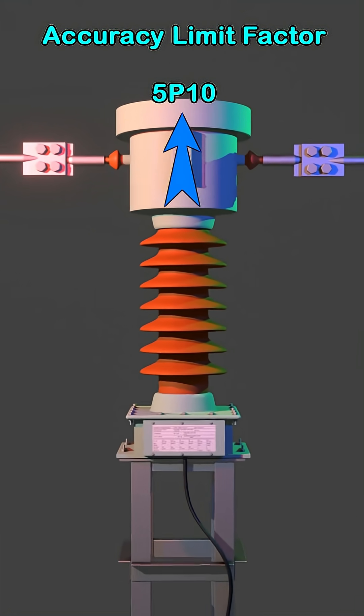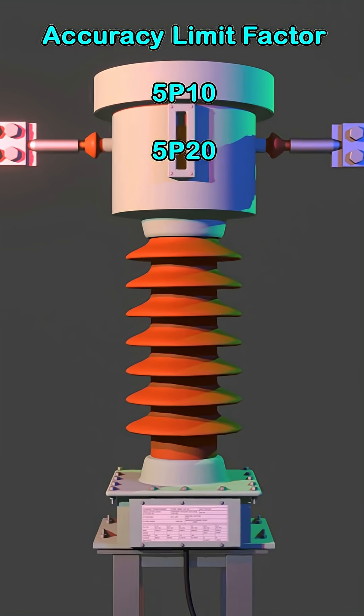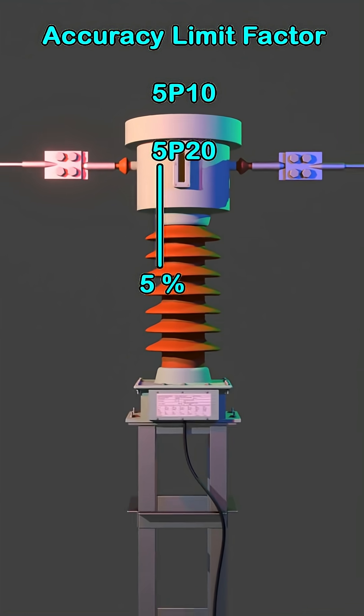The letter P represents protection. Let us take the example of 5P20. It means the protection core of the CT will have a maximum error of 5% within 20 times the rated primary current.